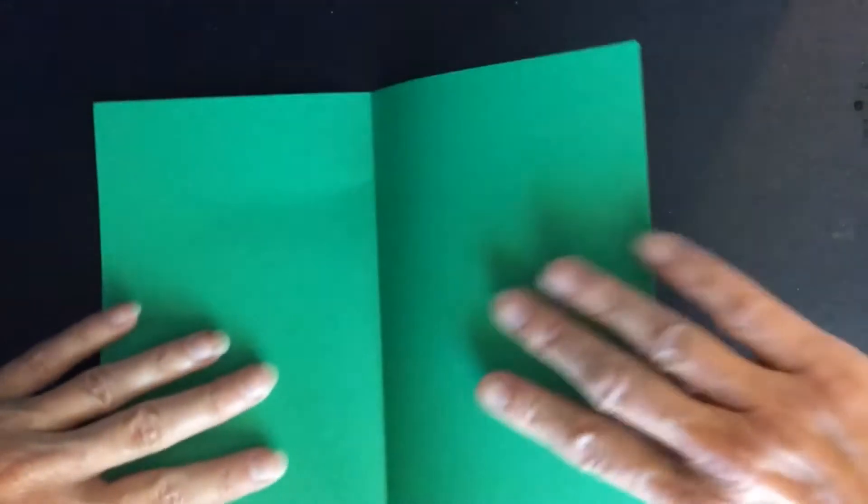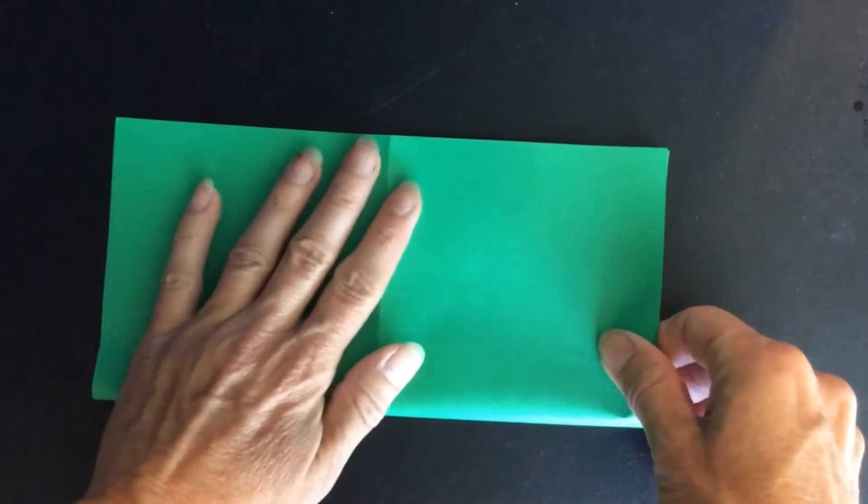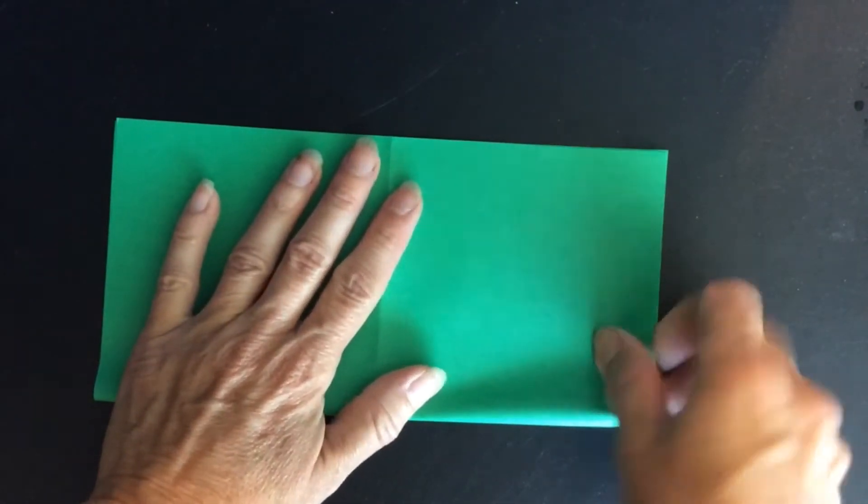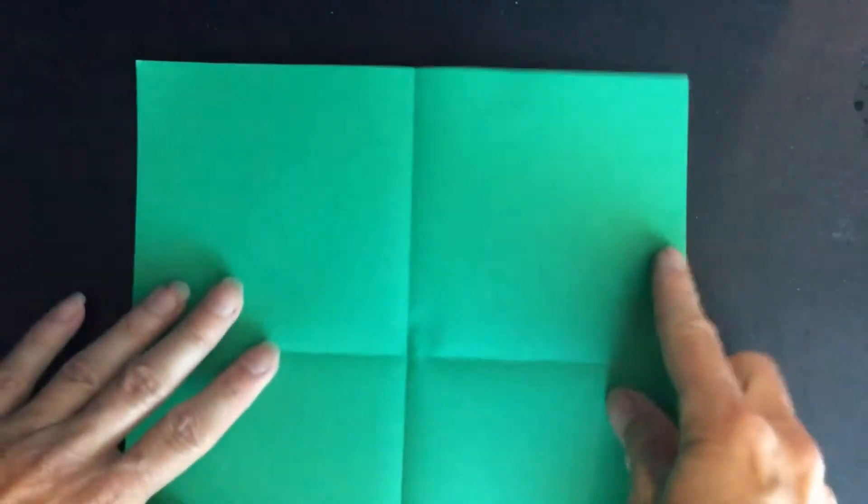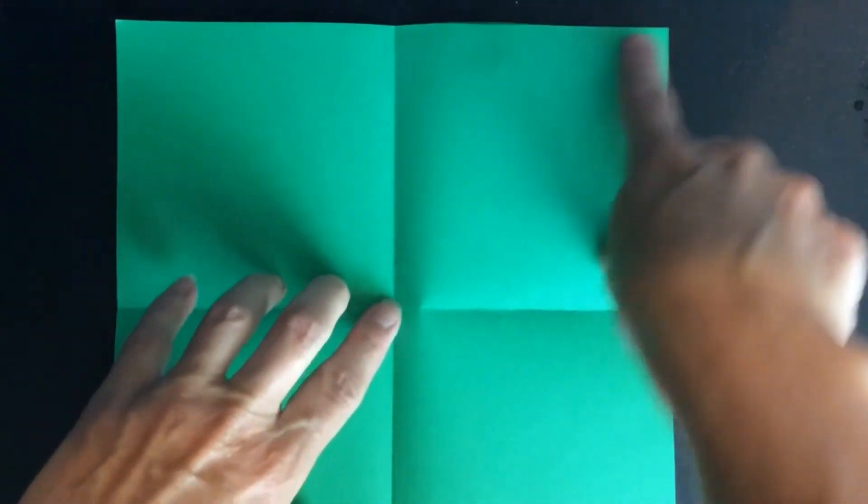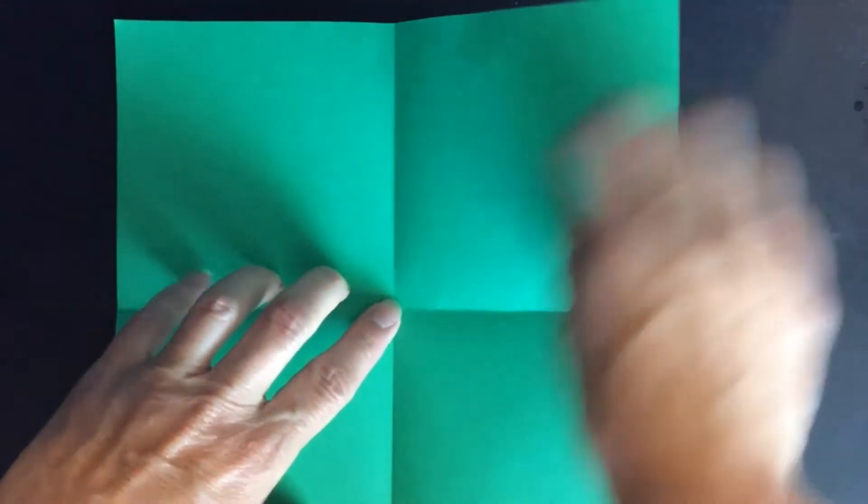Unfold it. Fold it in half the other direction. Unfold again and fold each of the four corners in toward the center.